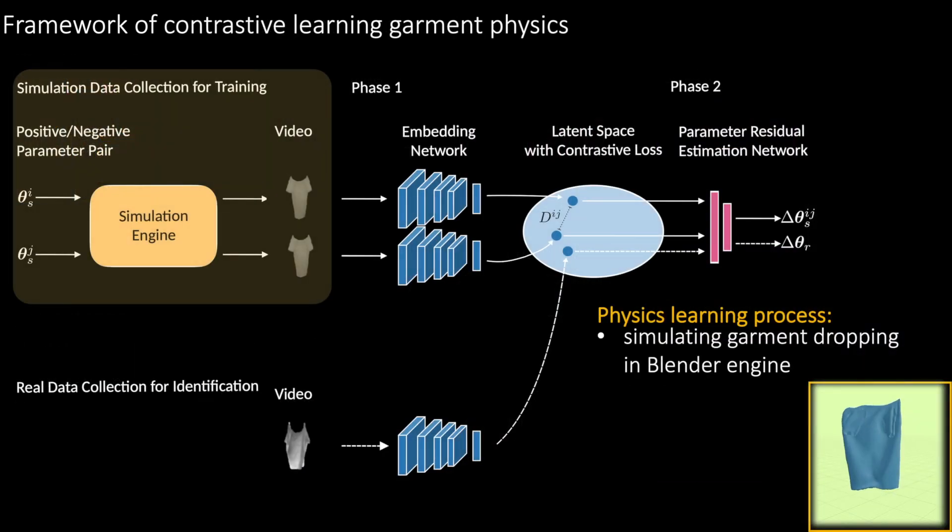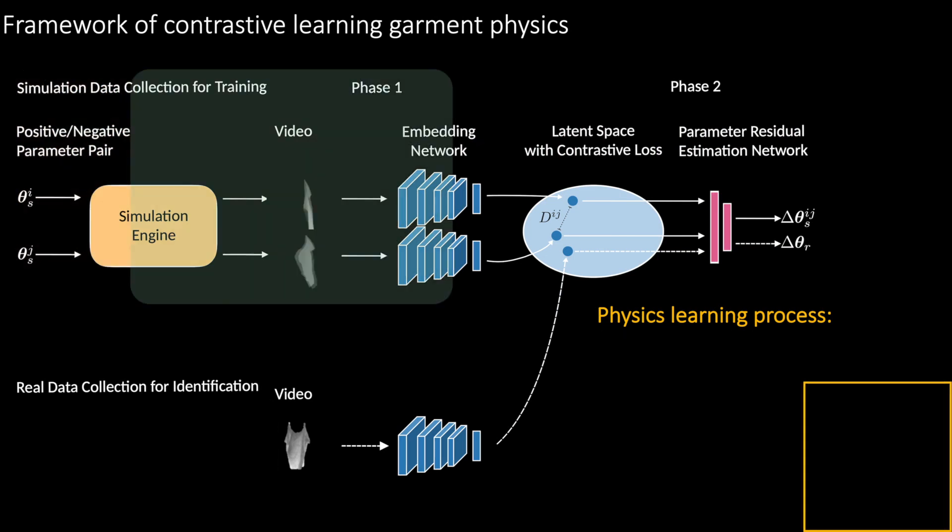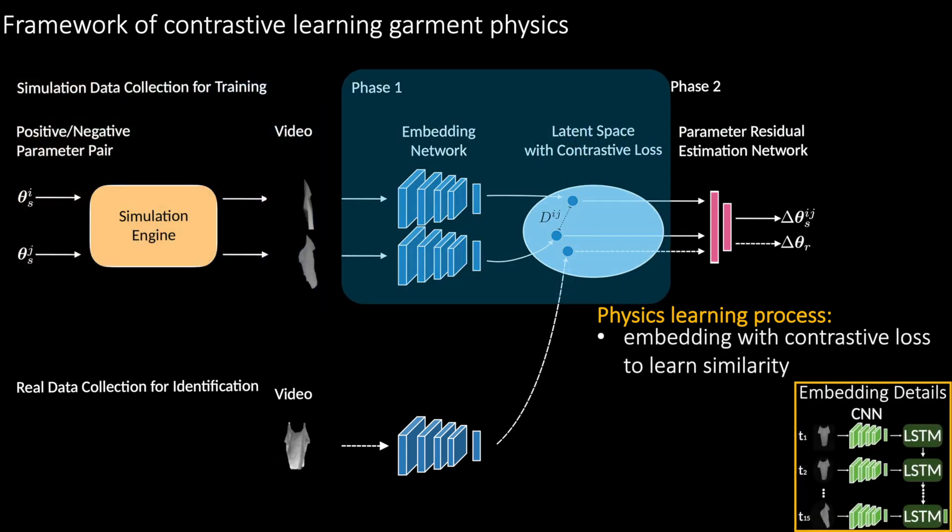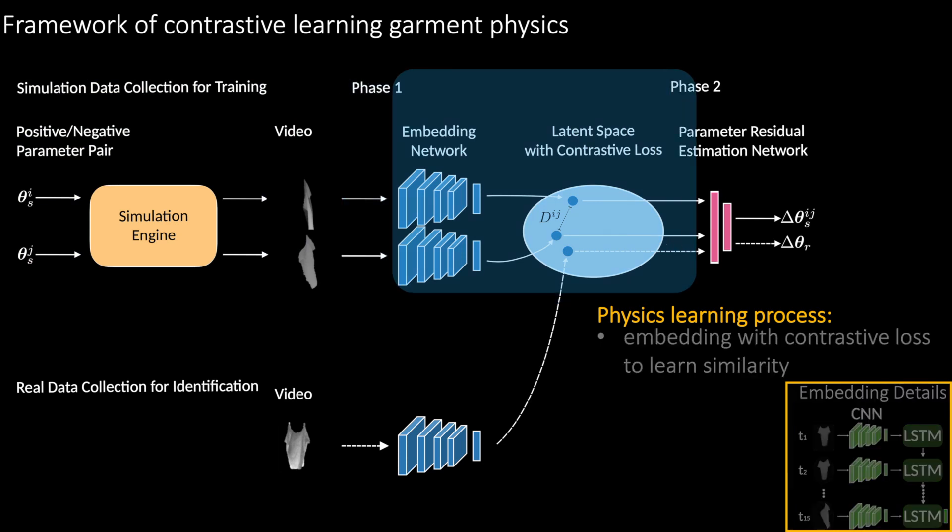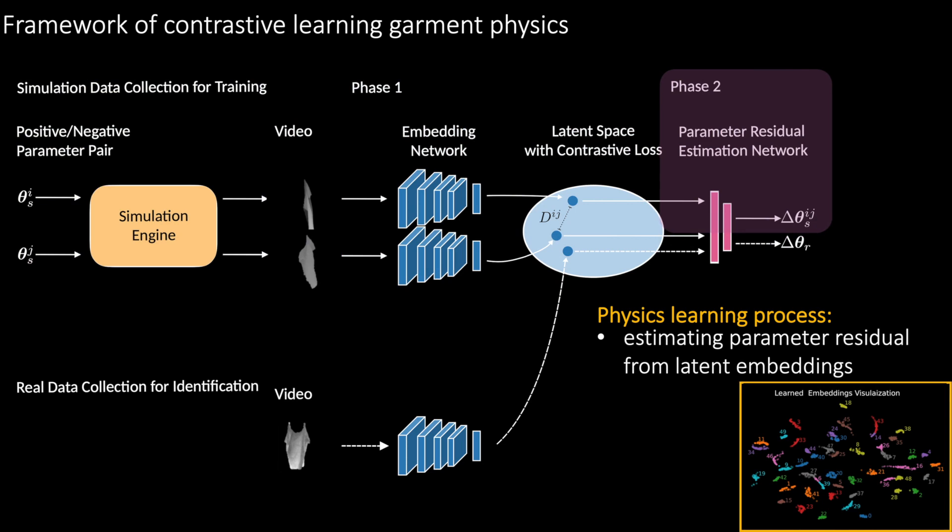For the framework of contrastive learning garment physics, we first generate depth video clips in the Blender simulation engine with various physical properties. The generated video clips are then mapped onto the embedding space using a contrastive loss. Then the parameter error is learned from the embedded representation in a supervised manner.